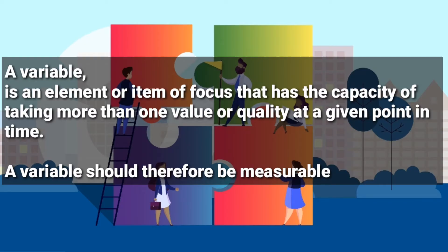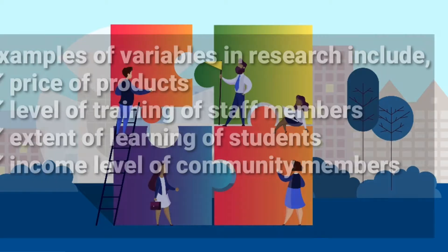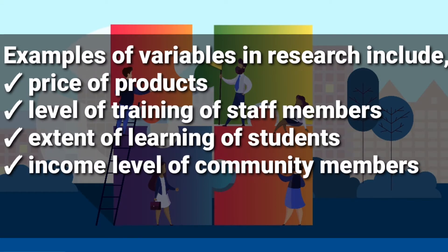Examples of variables in research include prices of products, the level of training of staff members, the extent of learning of students, and the income level of community members. They vary and have the capacity of taking more than one value or quality at a given point in time, and they can be measured.